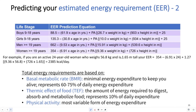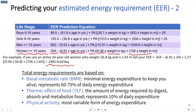For example, you are a 24-year-old woman that weighs 56.8 kilograms and is 1.65 meters tall. To calculate the EER, we use the equation for females greater than 19 years old: 351 minus 6.91 times her age (24), plus the PA value of 1.27 from the previous chart, plus 9.36 times the weight in kilograms (56.8), plus 726 times the height in meters. This gives you the estimated calories you should take in per day.